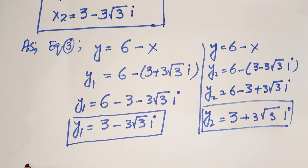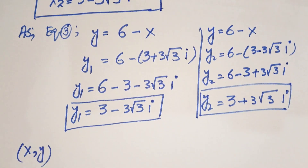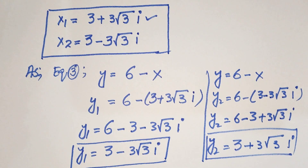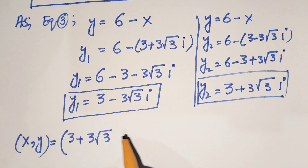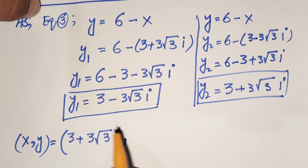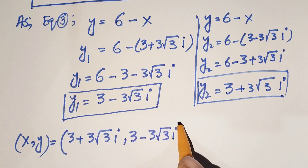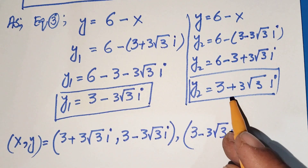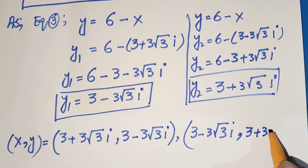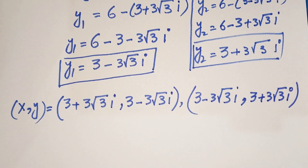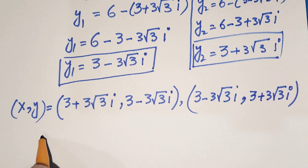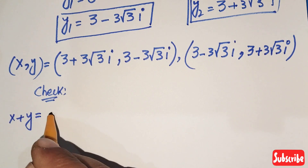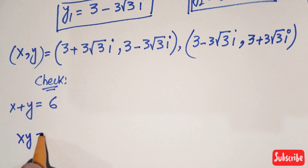So writing the solution pairs (x, y), we have two pairs: x1 equals 3 plus 3 square root of 3 i with y1 equals 3 minus 3 square root of 3 i, and x2 equals 3 minus 3 square root of 3 i with y2 equals 3 plus 3 square root of 3 i. We can verify our results by substituting these values into the original equations.